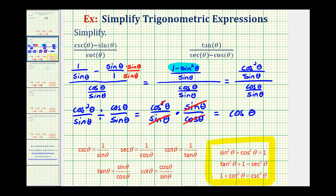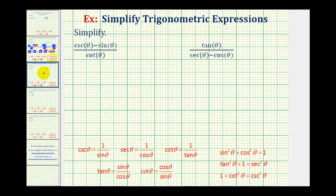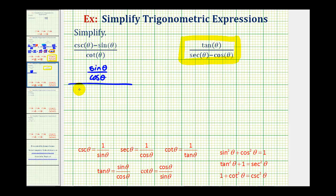So the given expression simplifies to cosine theta. Now let's take a look at the second expression. Again, we're going to simplify this expression. Notice none of the trig functions are squared, so we'll go ahead and convert everything to sine and cosine again. Tangent theta is equal to sine theta divided by cosine theta, and for the denominator, secant theta is equal to one over cosine theta. And then for cosine theta, because this is in fraction form, we'll write this as cosine theta over one.